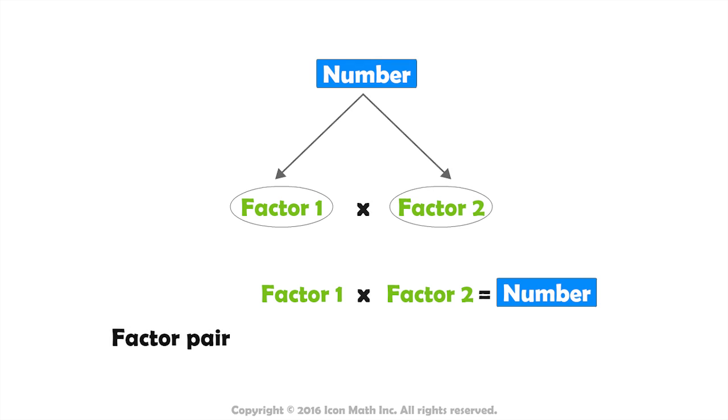Also a factor pair for a whole number consists of two factors that when multiplied together we get that whole number.